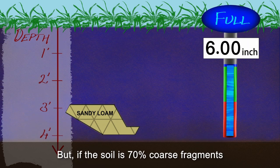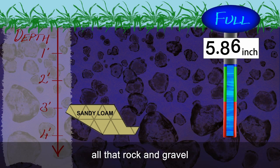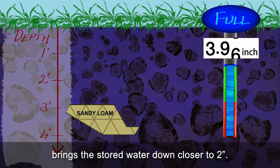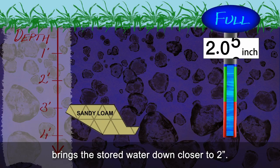But if the soil is 70% coarse fragments, all that rock and gravel brings the stored water down closer to 2 inches.